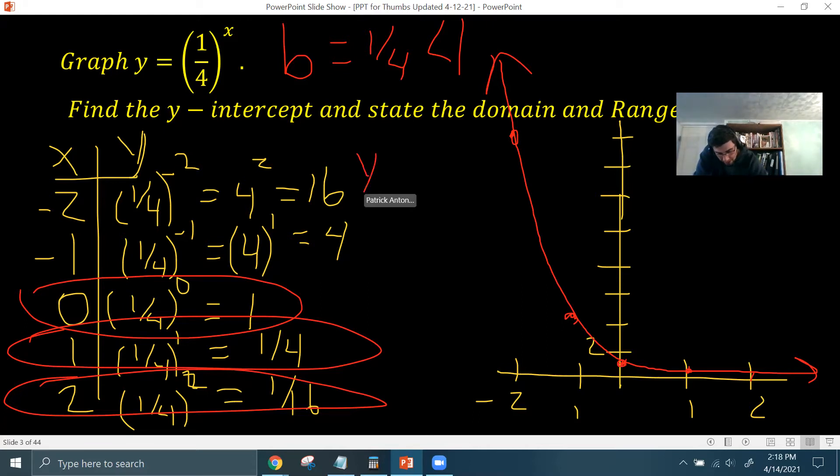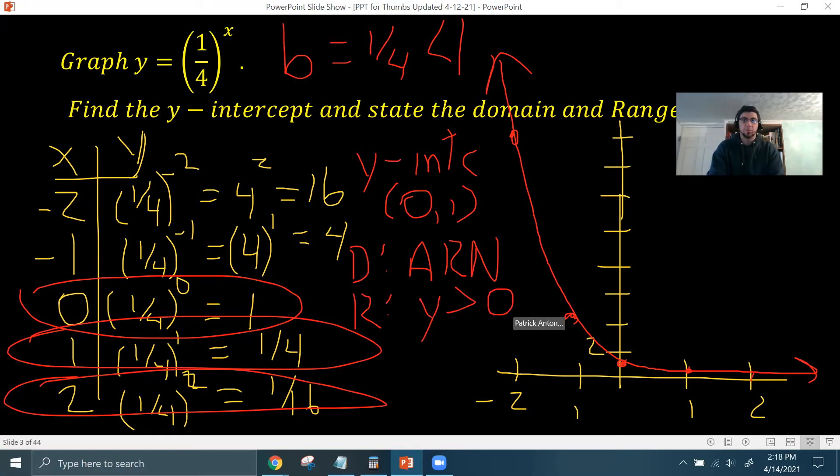Okay, so just to finish, we have a y-intercept of (0, 1). The domain, again, abbreviating all real numbers. And the range is y greater than 0. Same range as the previous problem as well.